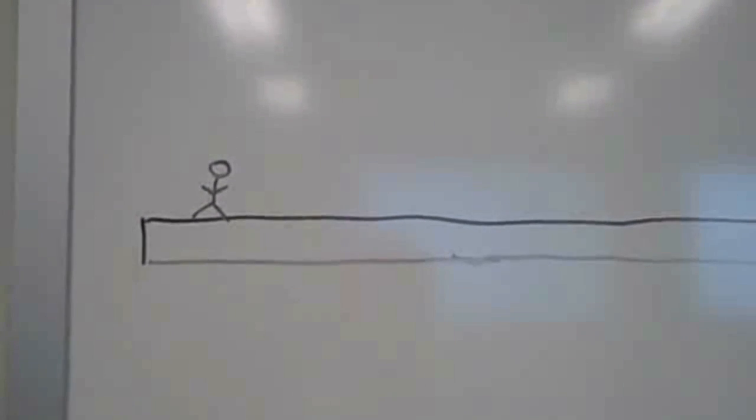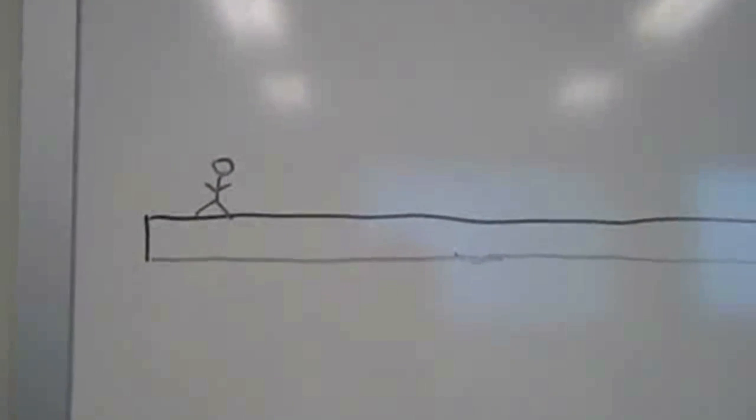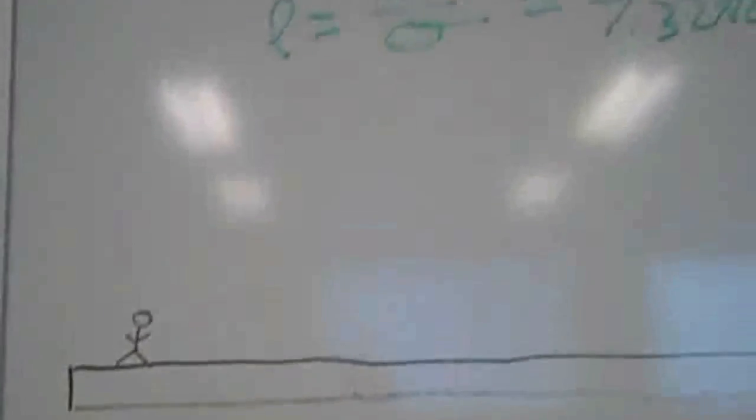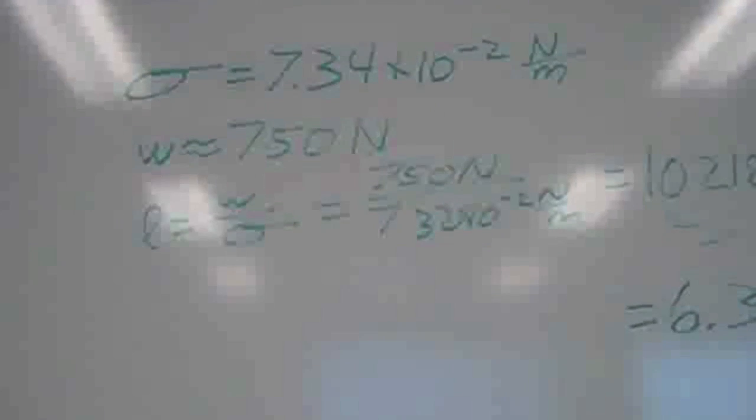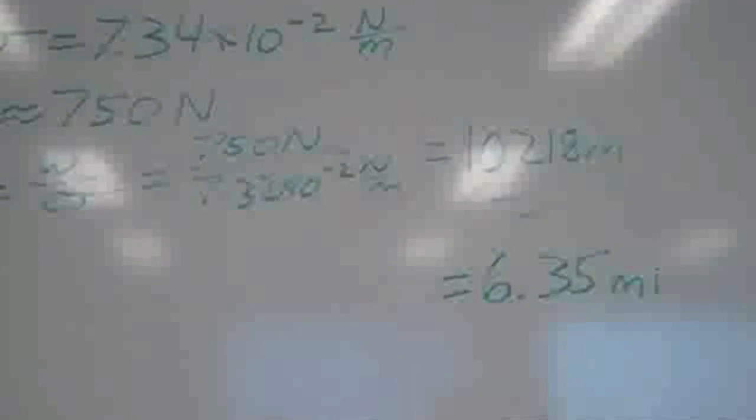What would it take for a person to be able to walk on water using only surface tension? Assuming that surface tension is about 7.34 times 10 to the negative 2 newtons per meter, and the person weighs about 750 newtons, that would be 10,218 meters, or about 6.35 miles. So that's our person — his shoes would have to look something like this.